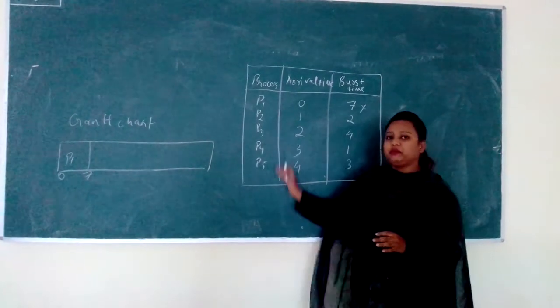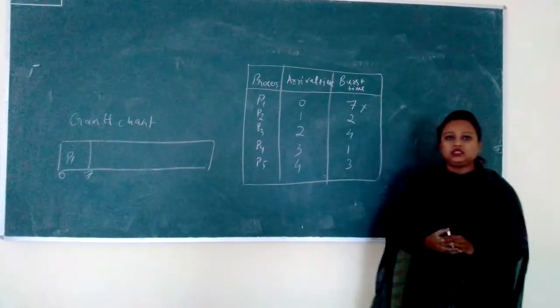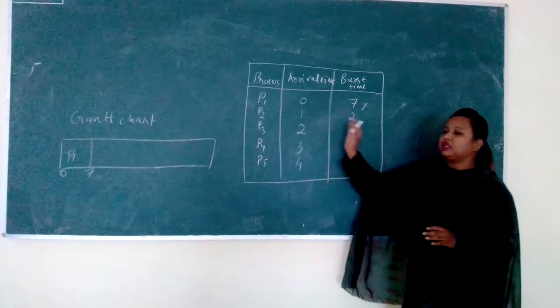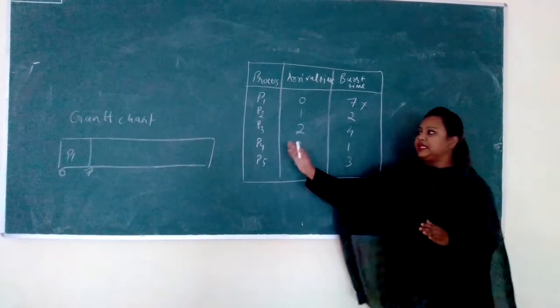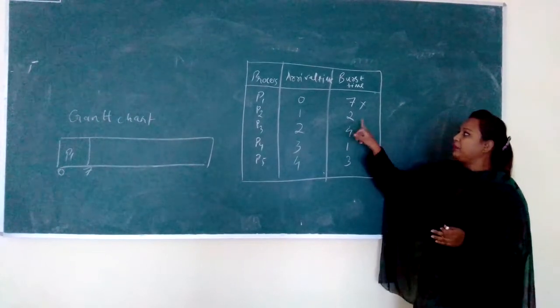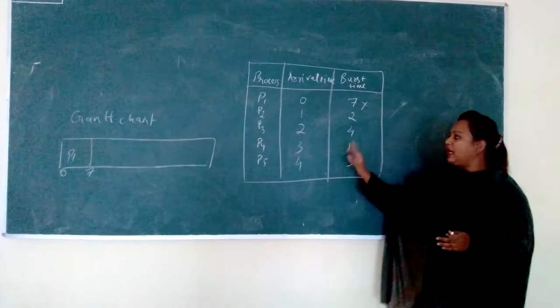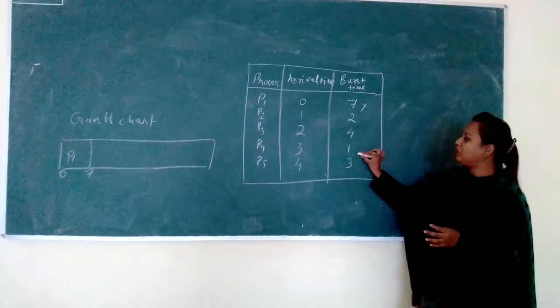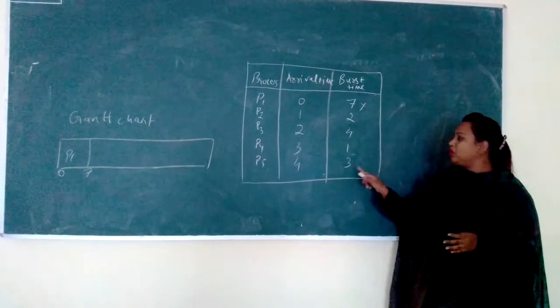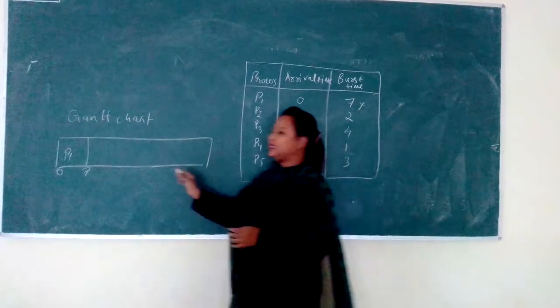Now we are left with the processes P2, P3, P4 and P5. CPU will search for the further processes. It will look again for more priority to get assigned in the Gantt chart. The burst time for P2 is 2 seconds. But as we have seen other processes also, 1 is lesser compared to other processes. So it will give more priority to P4. So now P4 will be assigned.